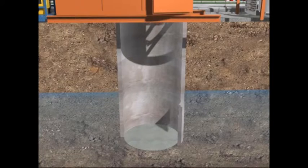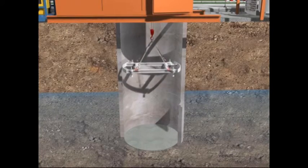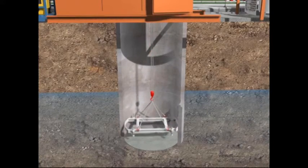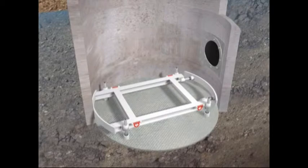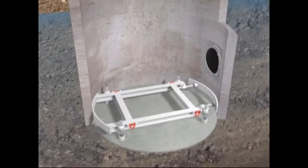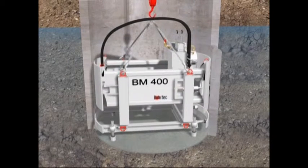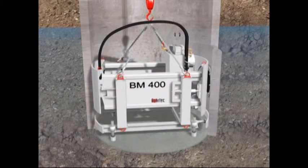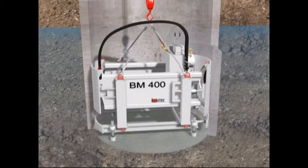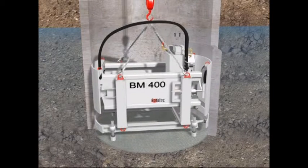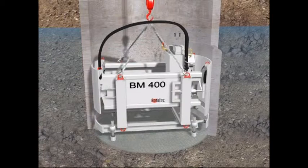The base frame is first lowered into the shaft and easily set for height, grade and line before being braced in position. The BM400 is then placed on the base frame and fixed in position. Use of the base frame simplifies the operation and eliminates the difficult time-consuming job of aligning the boring machine.